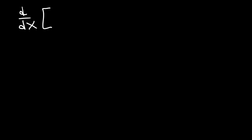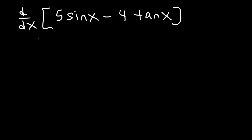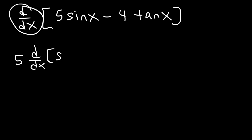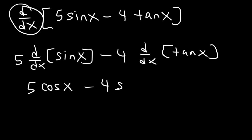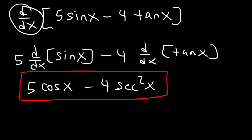Now let's go ahead and work on some examples. Let's find the derivative of 5 sin x minus 4 tangent x. Distributing this, it's going to be 5 times the derivative of sin x minus 4 times the derivative of tangent x. The derivative of sine is positive cosine, and the derivative of tan is secant squared. So the answer is 5 cosine x minus 4 secant squared x.